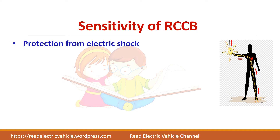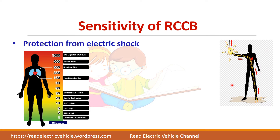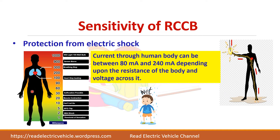The main objective of the RCCB is to protect human beings from electrical shock. This chart shows the relation between the milliamps of current that can flow through a human body and its effect on human life. When 1 milliamp of current flows through the body, you might feel a sensation. But for 30 milliamps, suffocation may occur. This varies from person to person depending upon the resistance of the body and also whether you are dry or wet.